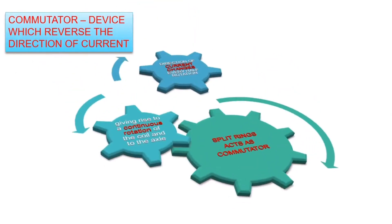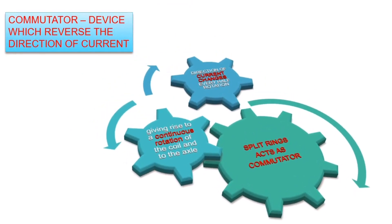Commutator: a device which is used to reverse the direction of current. Reversing of current is repeated at each half rotation, giving rise to the continuous rotation of the coil and the axle. The direction of current changes every half rotation. Here, a device used to change the direction of current is called a commutator. In this particular case, the split rings are acting as the commutator.